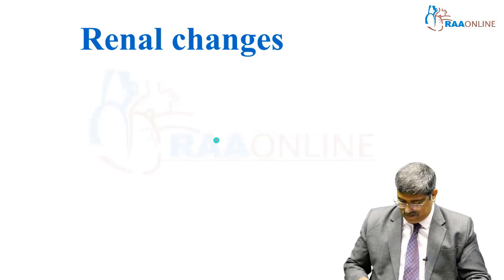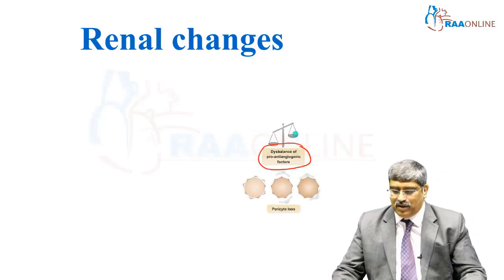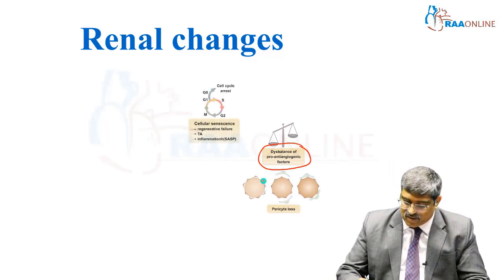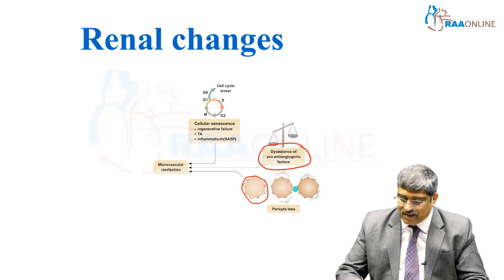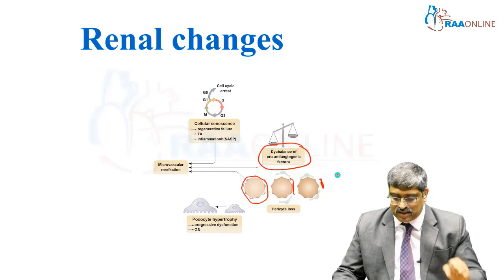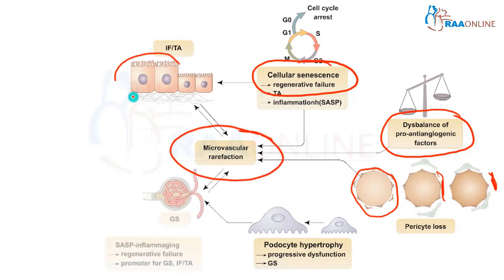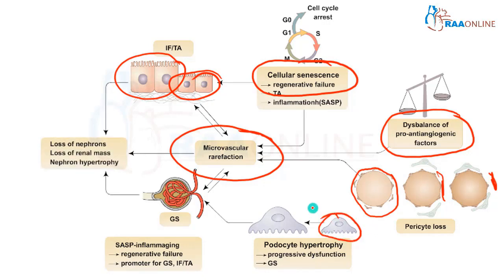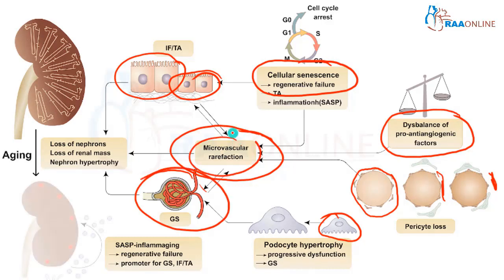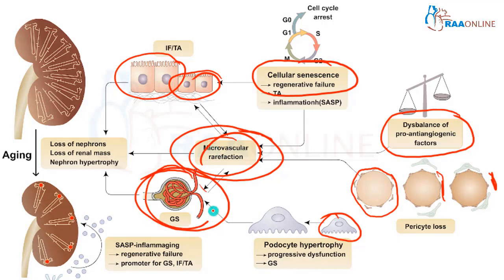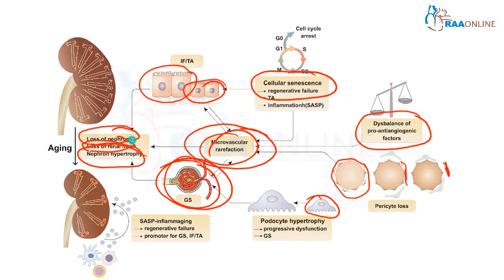Coming to renal changes, there is an imbalance of pro- and anti-angiogenic factors which causes pericyte loss. Normally cells are arranged nicely, but pericyte loss leads to interstitial edema. The cells become old and there is a microvascular reaction. Podocyte hypertrophy affects the juxtaglomerular apparatus, and microvascular rarefaction further impacts it. Overall, there is loss of nephrons, loss of renal mass, and nephron hypertrophy, affecting the kidney from the whole organ down to the cellular level.